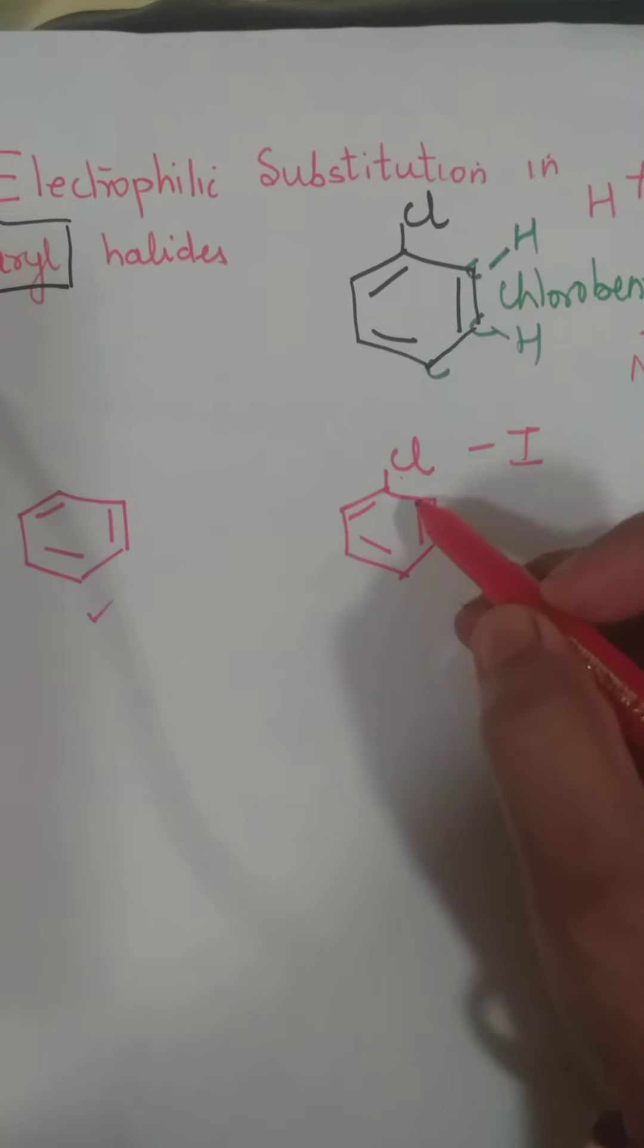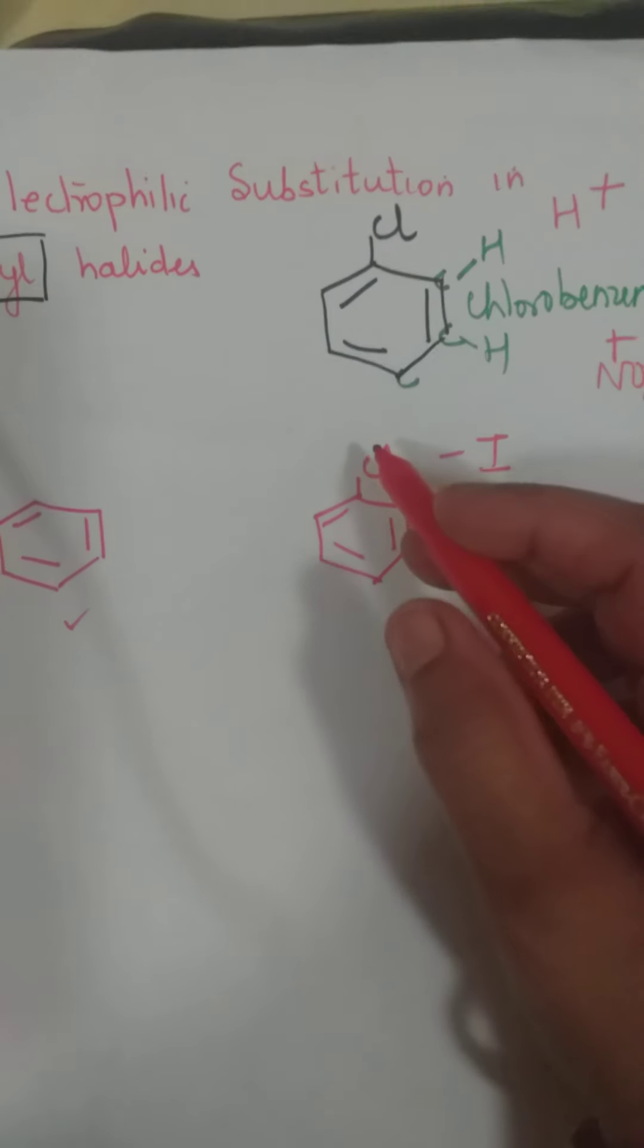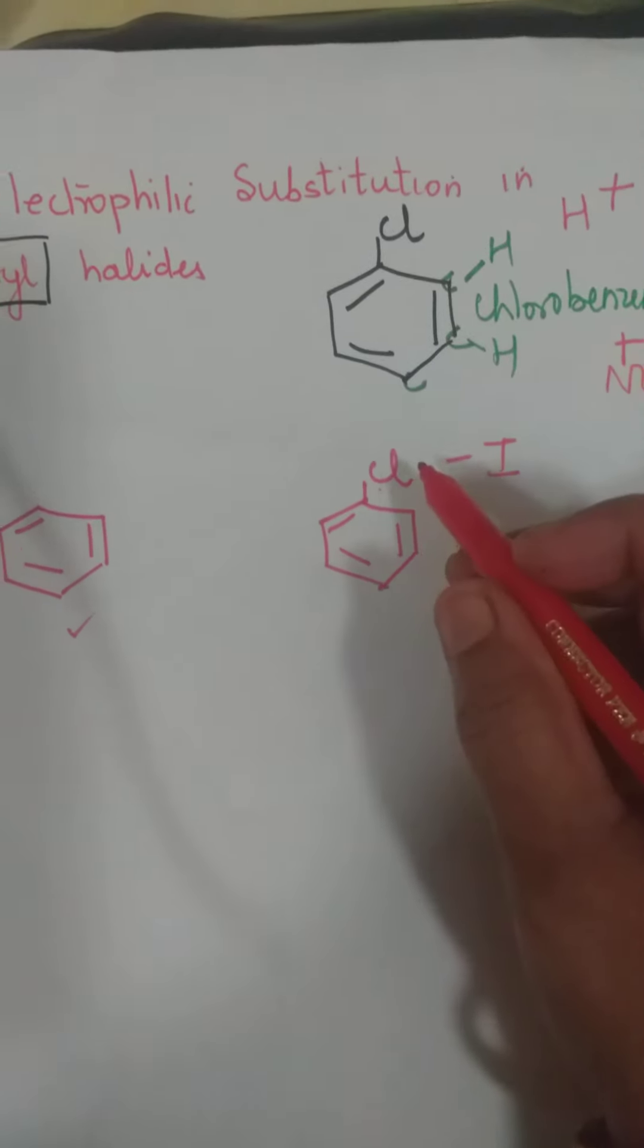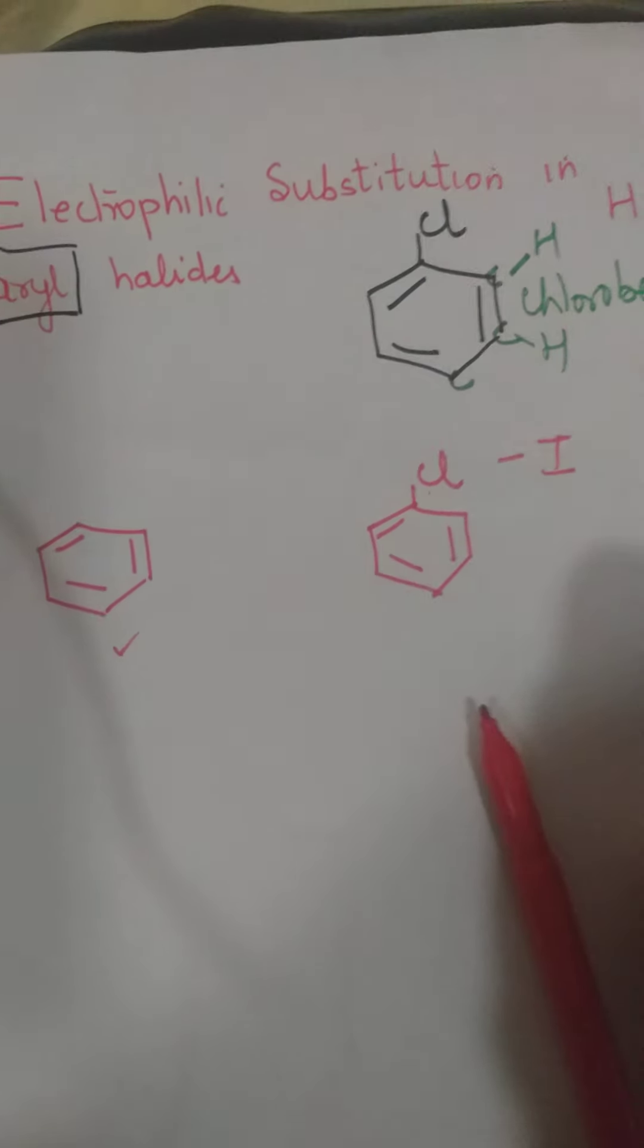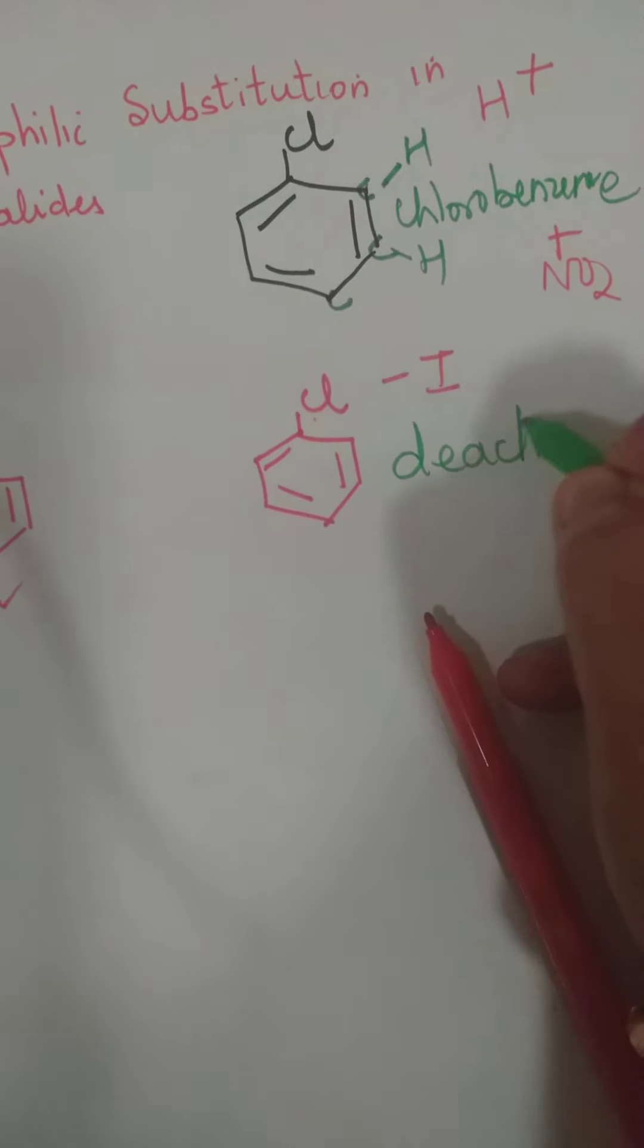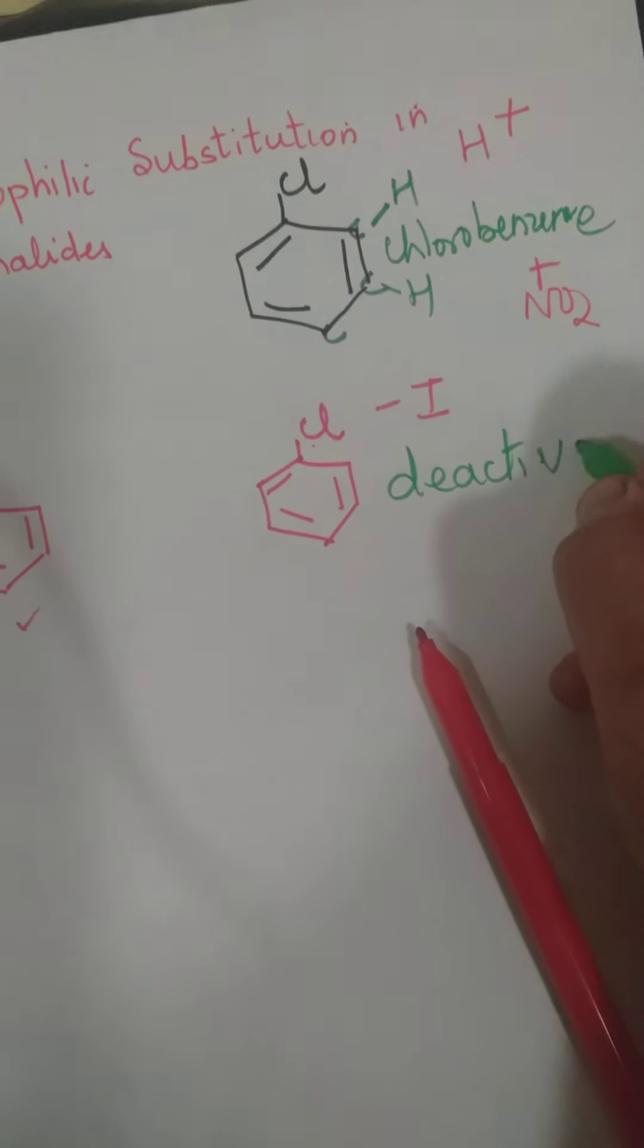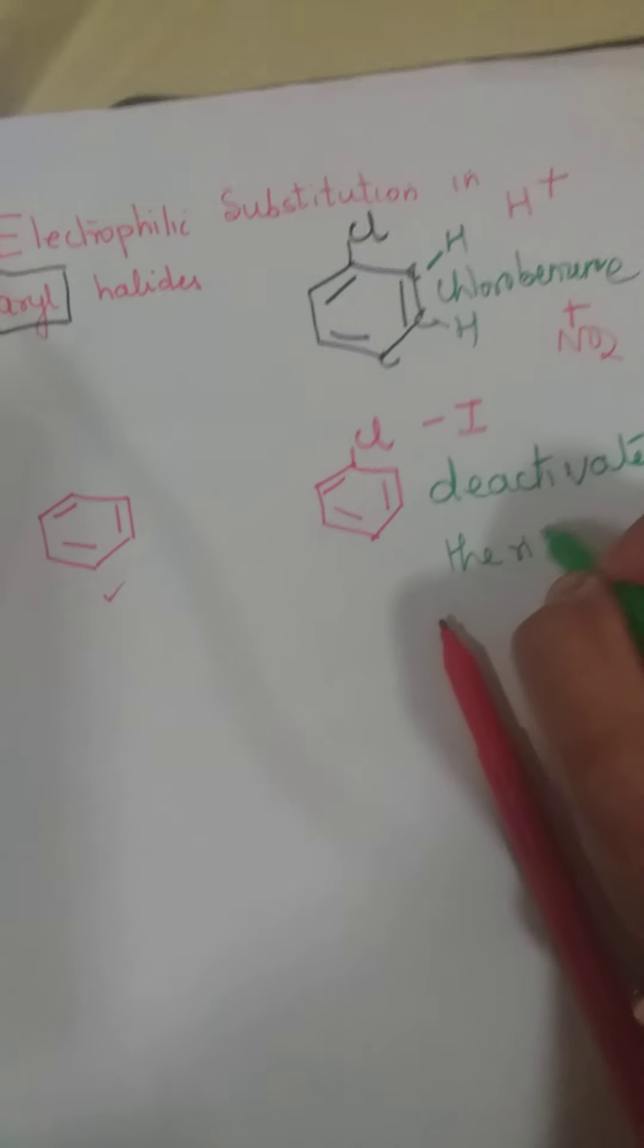Toh, minus I ka meaning kya hai? Woh, electron ko apne aur kheench raha hai. Because of minus I effect, electron ko apne aur kheench raha hai. And therefore, we say, it deactivates the ring. Kya karta hai? Deactivate. It deactivates the ring.